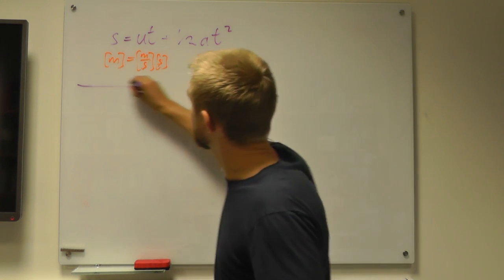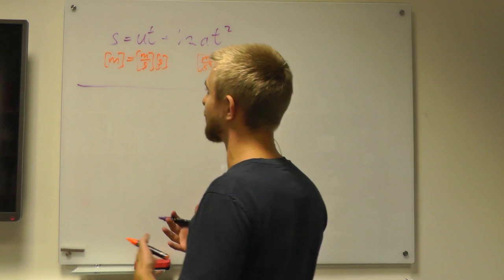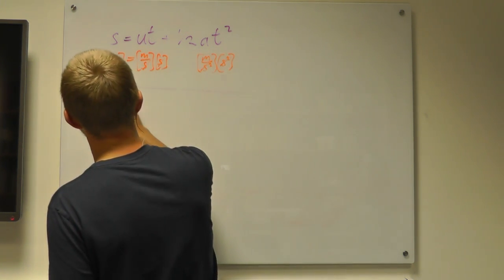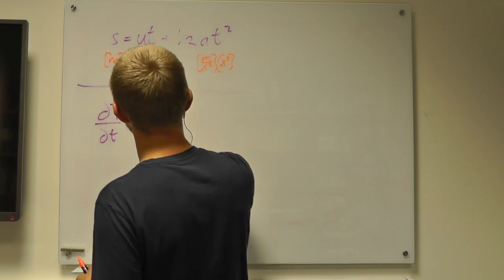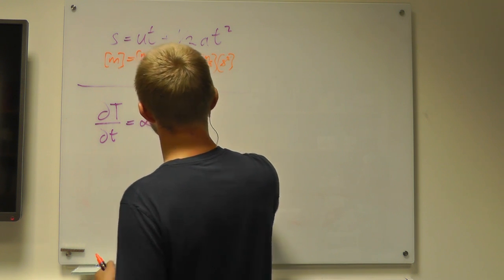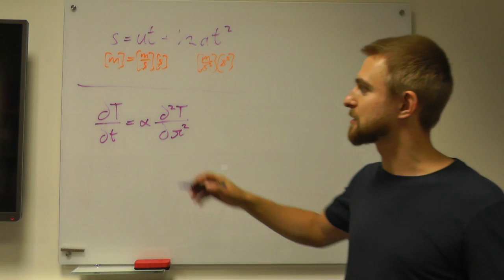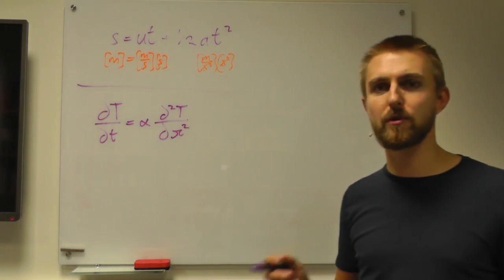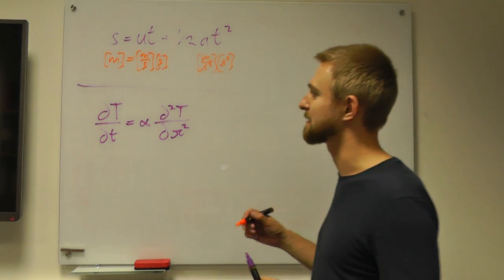So let's take as an example the diffusion equation, the diffusion of heat. So we'll look at the first derivative of temperature with respect to time equals some coefficient times the second derivative of temperature with respect to space. So we just go through all the units and see therefore what alpha must be to make this equation make sense.